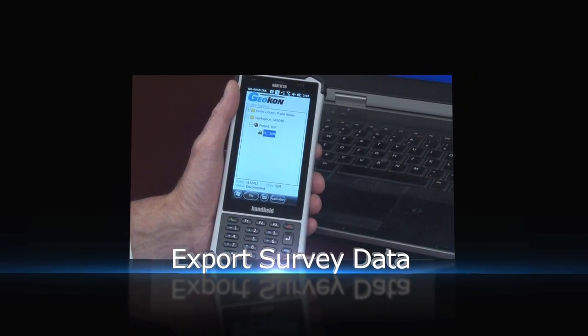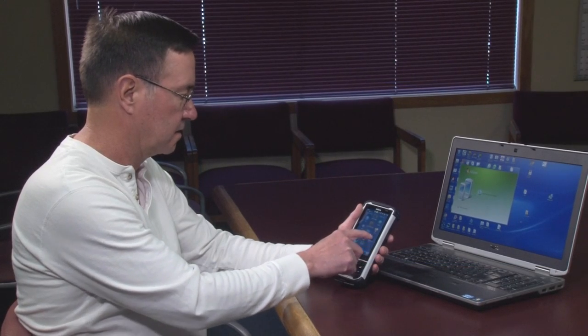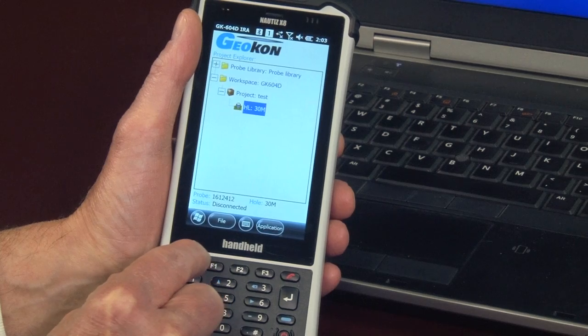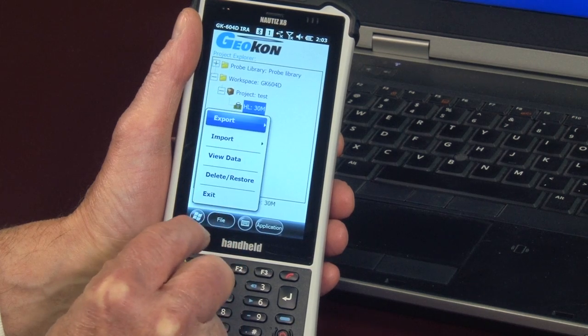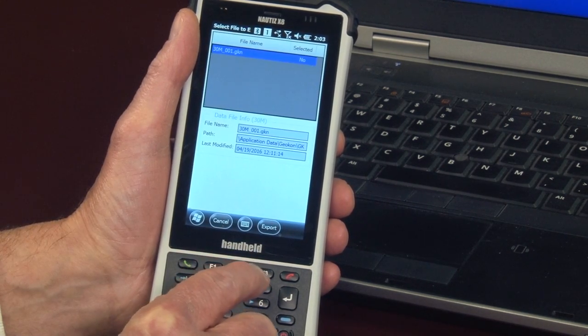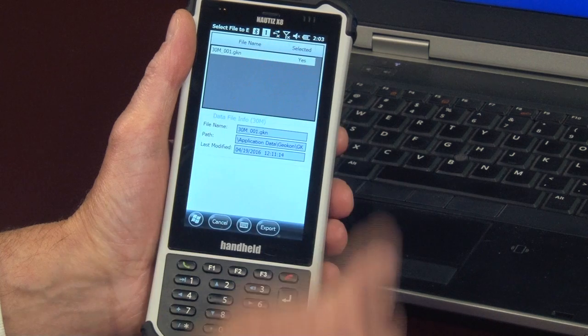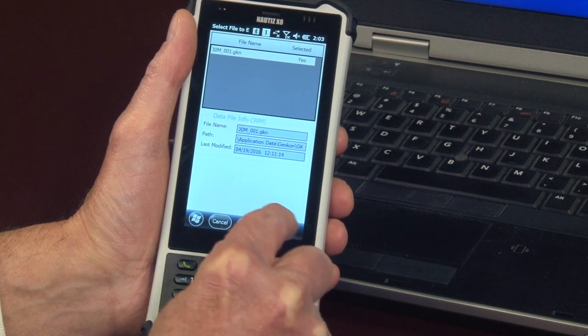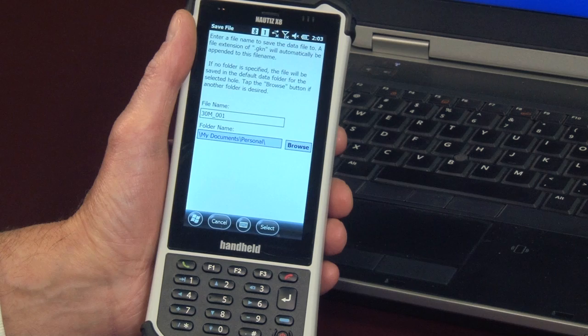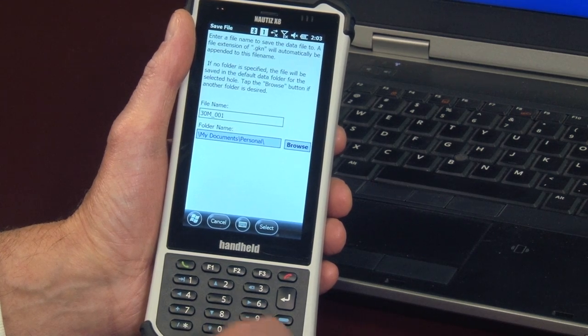Back at the office, locate the Geocon application on the handheld's main window. Once opened, touch File, then Export, followed by Data. Select the data file you wish to export. Touch Export, then indicate the data's destination. Touch Select, and it's done.